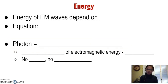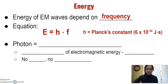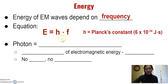How does energy relate to all of this? Waves carry energy, and the amount of energy an electromagnetic wave has depends on its frequency. This is expressed through the equation: the energy of one photon of light equals h — Planck's constant — times frequency. Planck's constant is 6 × 10⁻³⁴ joules·seconds. Energy and frequency have a direct relationship: if frequency goes up, energy goes up; if frequency goes down, energy goes down, since Planck's constant remains fixed.